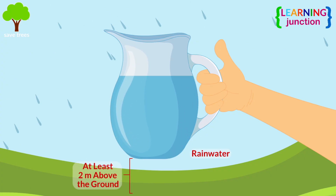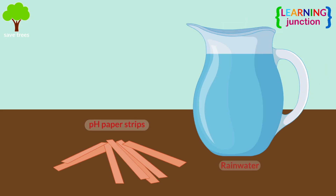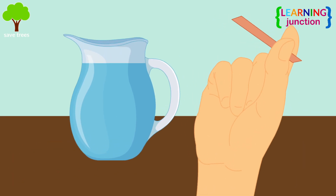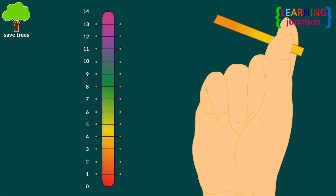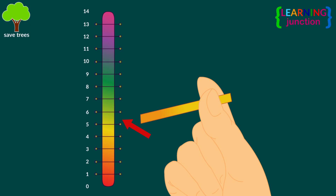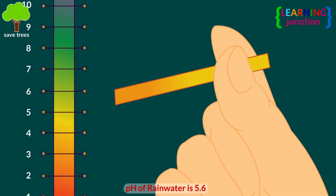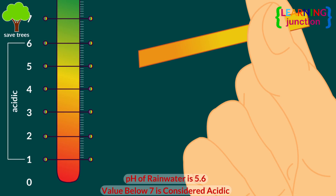Here is rainwater and these are some pH paper strips. Dip the pH paper into the collected rain. As soon as the color changes on the strip, compare it to the chart. The pH written next to that color is the pH of the collected rainwater. It clearly shows that rainwater is acidic.